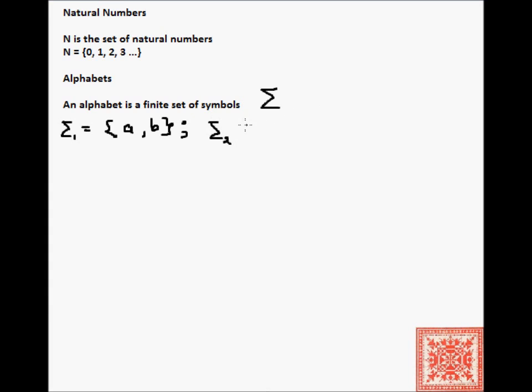Let's define sigma2. This will consist of ten symbols: 0, 1, 2, 3, all the way to 9. It is a set of digits in the decimal system. a, b, and the digits - these are individual symbols of sigma1 and sigma2.